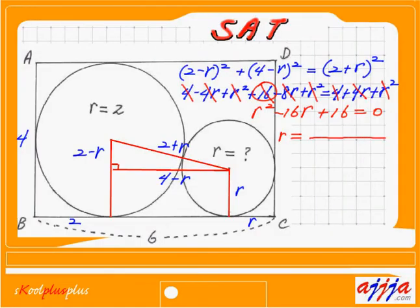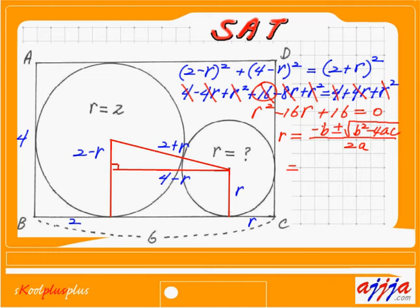I'll use the quadratic formula: R equals negative b plus or minus square root of (b squared minus 4ac), all over 2a. Plugging in: negative b is negative negative 16, so that's positive 16, plus or minus square root of (256 minus 4 times 1 times 16), which is 256 minus 64 equals 192. Over 2a, where a is 1, so over 2.